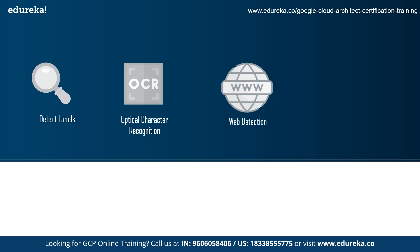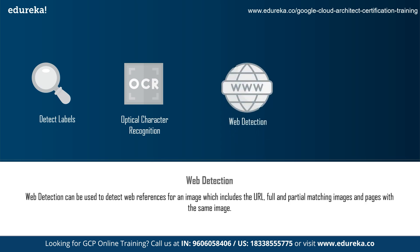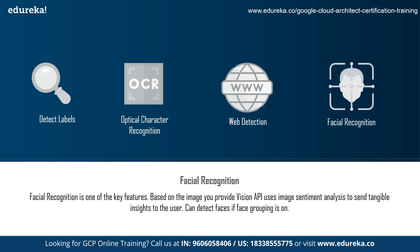Next is web detection. Web detection can be used to detect web references for an image — for example, if you use an image from the internet, you can check the URL, full and partial matching images, and pages that use the same image. Finally, facial recognition is a key feature. Vision API uses sentiment analysis to give tangible insights such as facial features, structure, and characteristics of a person. It can detect faces when face grouping is enabled.